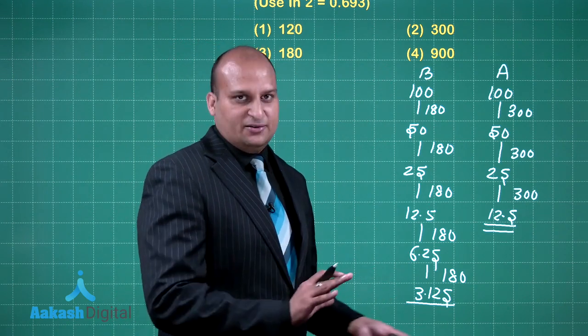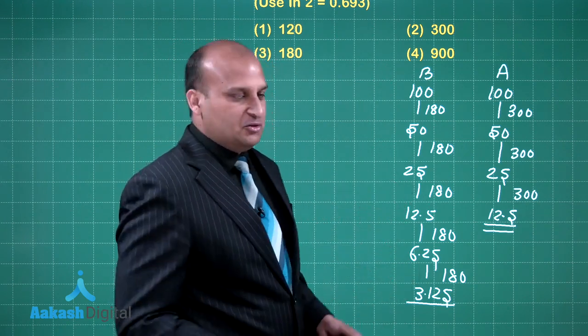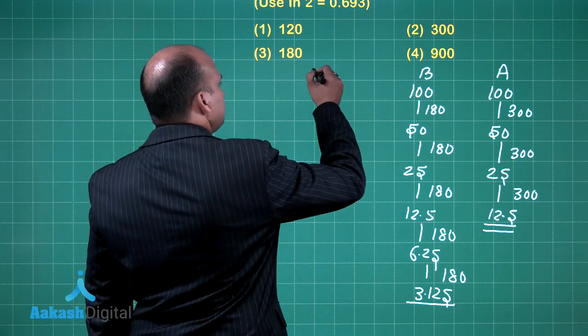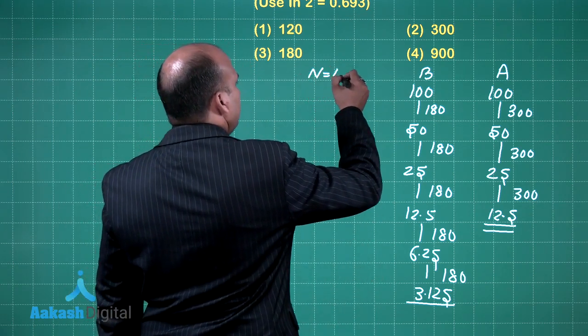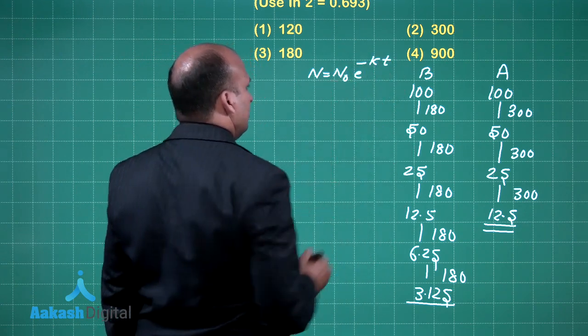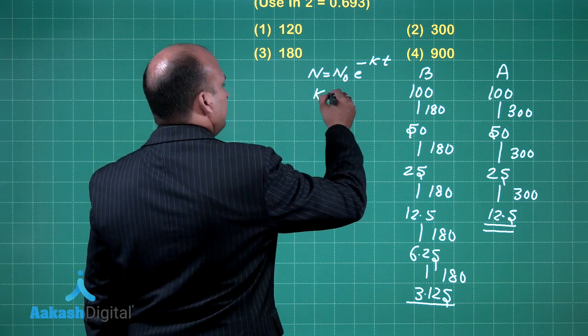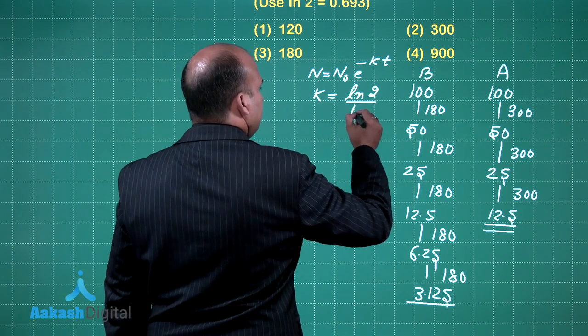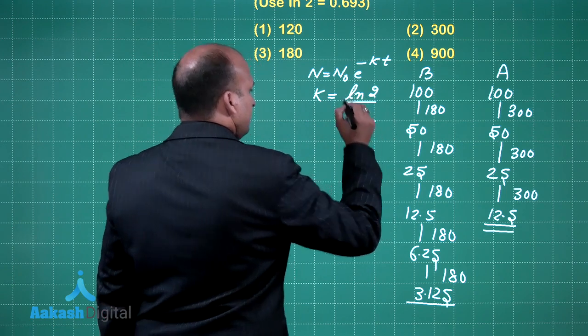But what is the other way, what is the actual way in which you should be solving? See you have this formula that N is equal to N naught e raise to power minus kT, where k can be calculated as ln 2 by T half.